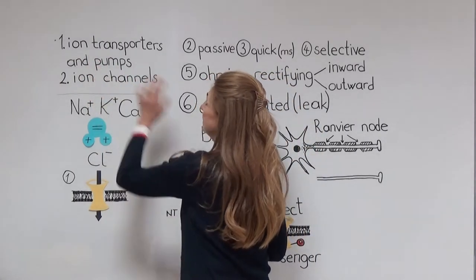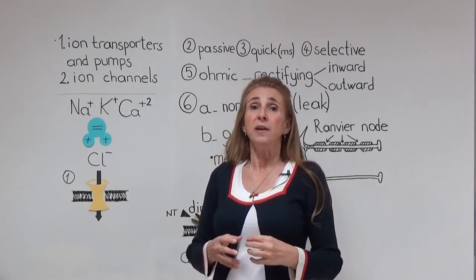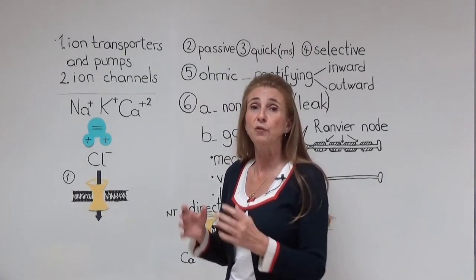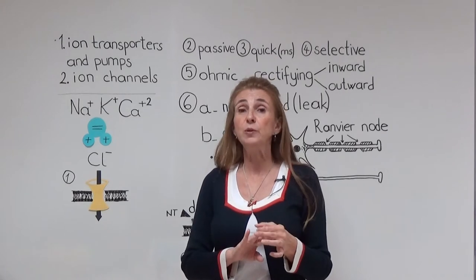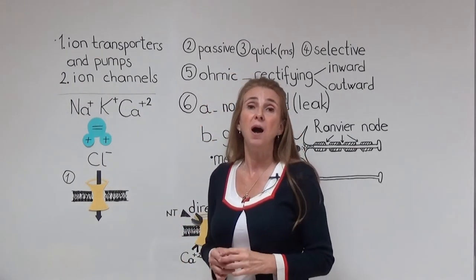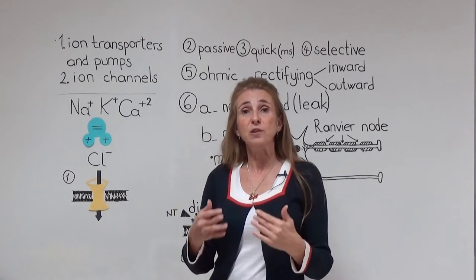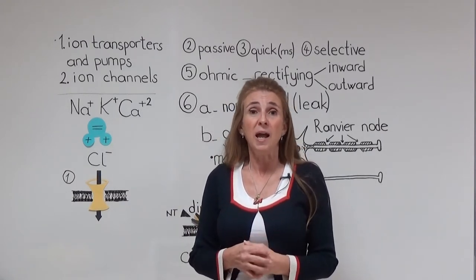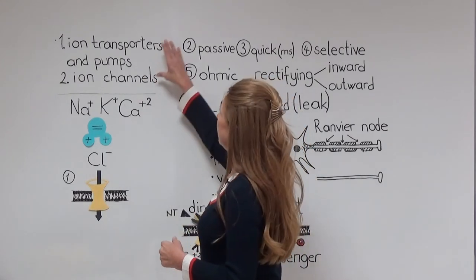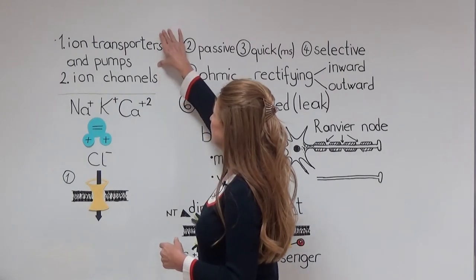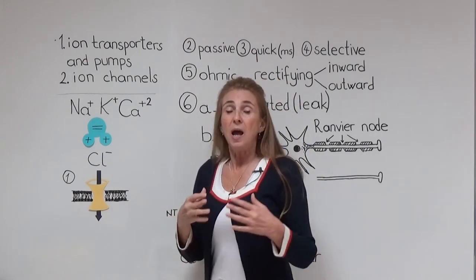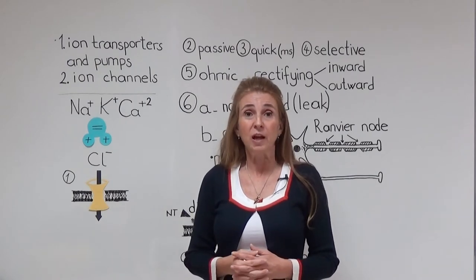The first group is ion transporters or ion pumps. These proteins are there to produce a concentration difference between the intracellular and extracellular fluid for our four ions: sodium, potassium, calcium, and chloride. The second group of proteins are ion channels. Ion channels let the passage of ions through the membrane and produce the membrane potentials, making use of the concentration difference that transporters and pumps have produced. The ions pass through the membrane to produce the electrical activities.